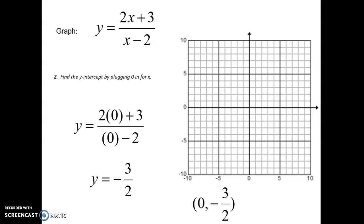This is going to go on the y-axis. A lot of students wonder how to graph a fraction. Negative three over two is the same thing as negative one and a half, so it's someplace between negative one and negative two, right about there. As we go along, we're going to start filling in parts of our graph.